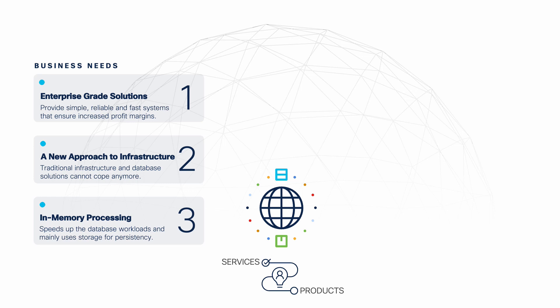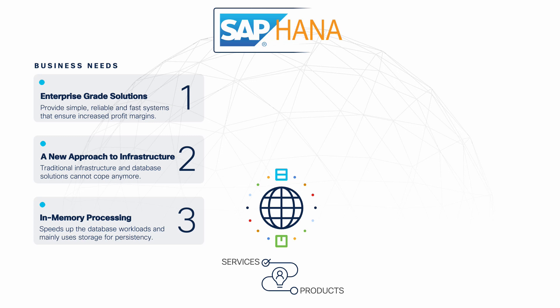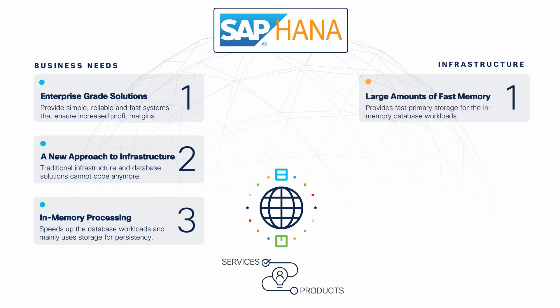One of the most advanced in-memory databases on the market is SAP HANA, an in-memory database system that combines transactional and analytical SAP workloads and provides the speed that is necessary to keep up with modern business needs. However, to use such a powerful system, you also need a powerful infrastructure that can run it with efficiency and reduced cost of ownership. Since SAP HANA databases run primarily from memory, they need a significant amount of RAM on the infrastructure side.